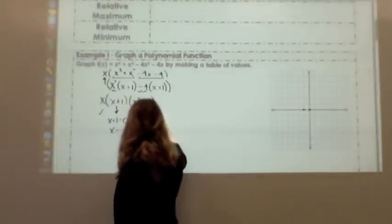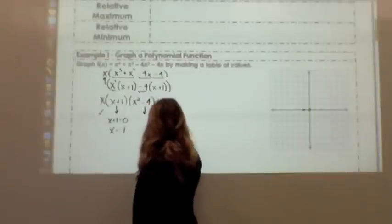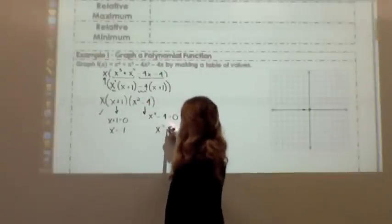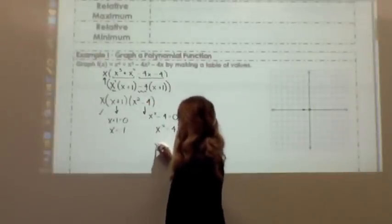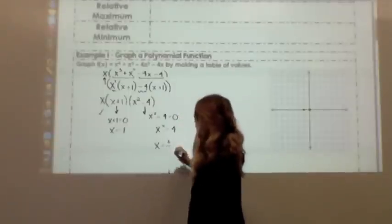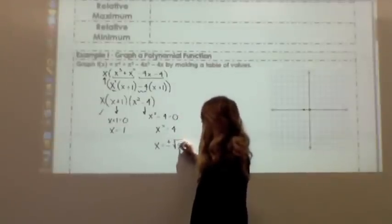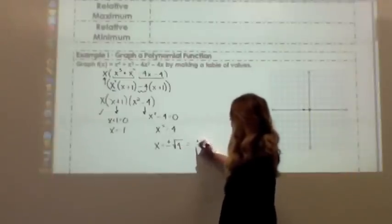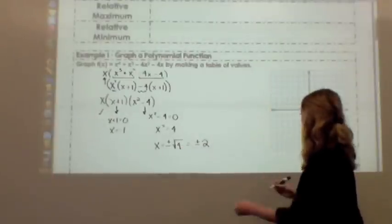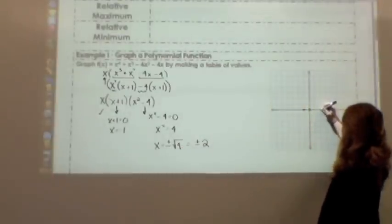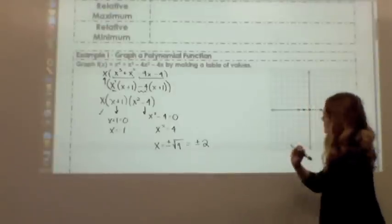Next, I'm going to set this factor equal to 0. I'm going to add 4 to both sides, and then I'm going to take the square root. And whenever I take the square root, I always have a positive or a negative. So the square root of 4, we have a positive or a negative 2. So I would plot a 0 at 2, and plot a 0 at negative 2.